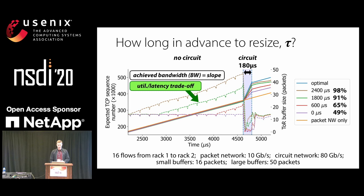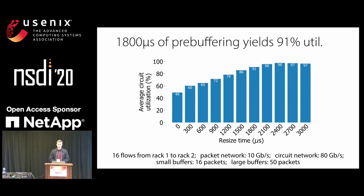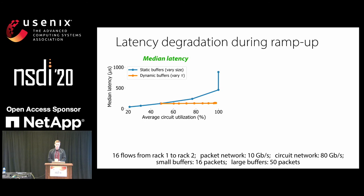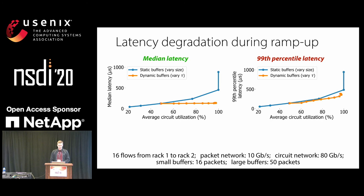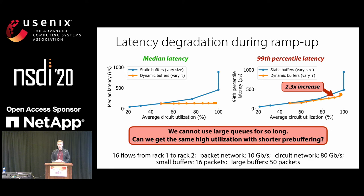Looking directly at circuit utilization versus pre-buffering amount, we achieve steadily increasing utilizations up to a maximum of 97-98%. However, returning to the latency trade-off: we achieve very good median latency, but tail latency remains problematic — some packets still get stuck during the large-queue period, resulting in a 2x increase in 99th percentile latency for 90% circuit utilization.